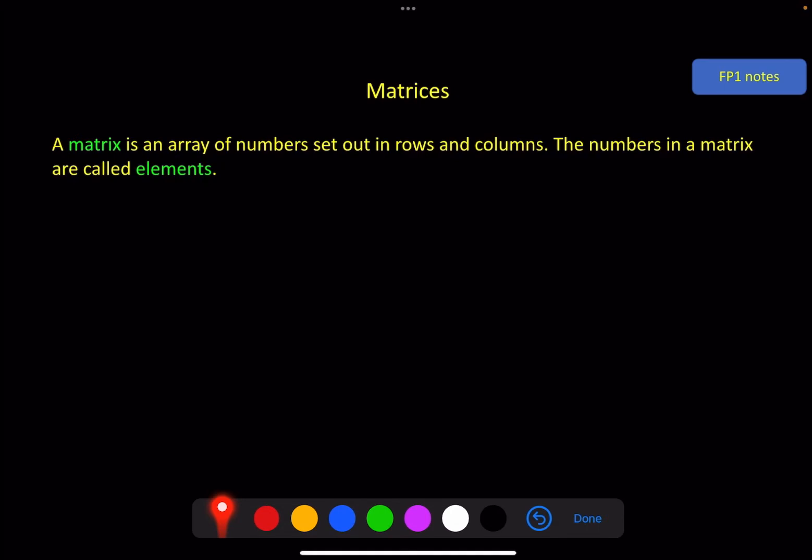So to begin, a few definitions for us. A matrix is an array of numbers set out in rows and columns. The numbers in a matrix are called elements. You could argue that it doesn't have to be numbers, but of course, in a maths course, numbers are what we're using. So something like this: 7, 2, 3, minus 1, 0, 4 is a matrix.